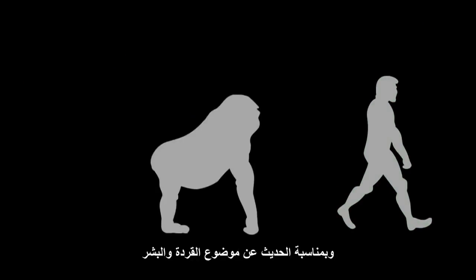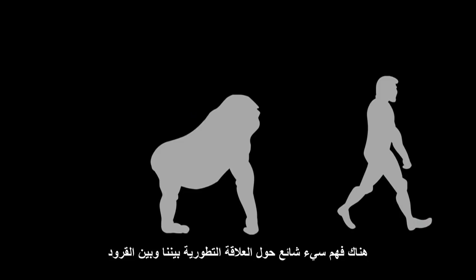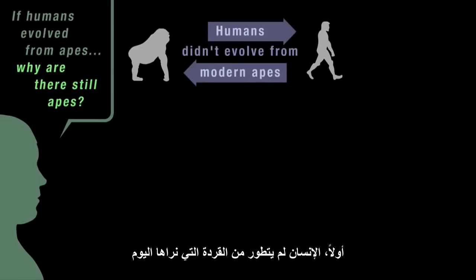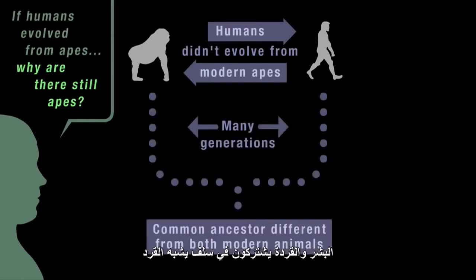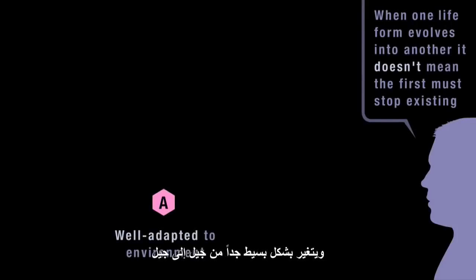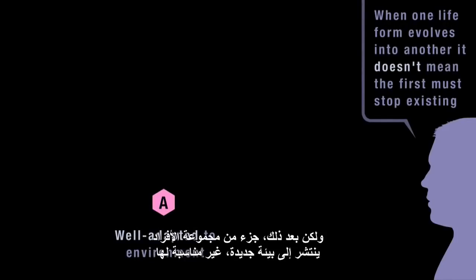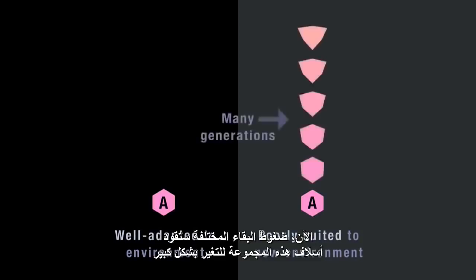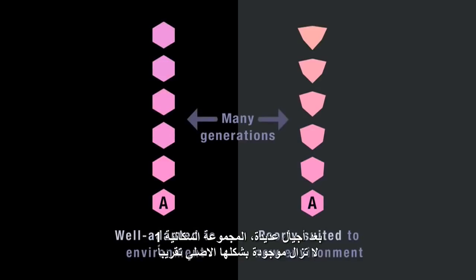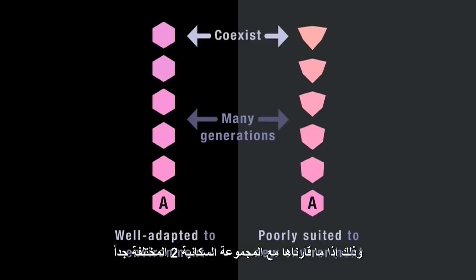While we're on the subject of apes and humans, there's a common misunderstanding about our evolutionary relationship with apes, revealed by the question: if humans evolved from apes, why are there still apes? Firstly, humans didn't evolve from the apes we see today — humans and modern apes share a common ape-like ancestor different from both modern animals. But secondly, when one lifeform evolves into another, that doesn't mean the first lifeform has to stop existing. A population so well adapted to its environment may change very little, while a separate group spreading to a new environment faces different survival pressures leading to dramatic change. After many generations, population one still exists in more or less its original form alongside the now very different population two — it didn't have to die out or change at the same rate.